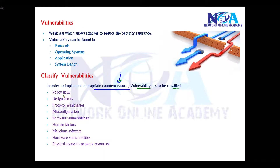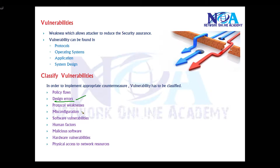There are different types of vulnerabilities. There can be policy flaws — for example, in your company there are some security policies applied and there may be issues with those policies. There can also be design issues, implementing protocols that are vulnerable to attacks, or misconfiguration in the network which leads to denying communication or other misconfiguration-related issues like wrong configurations.